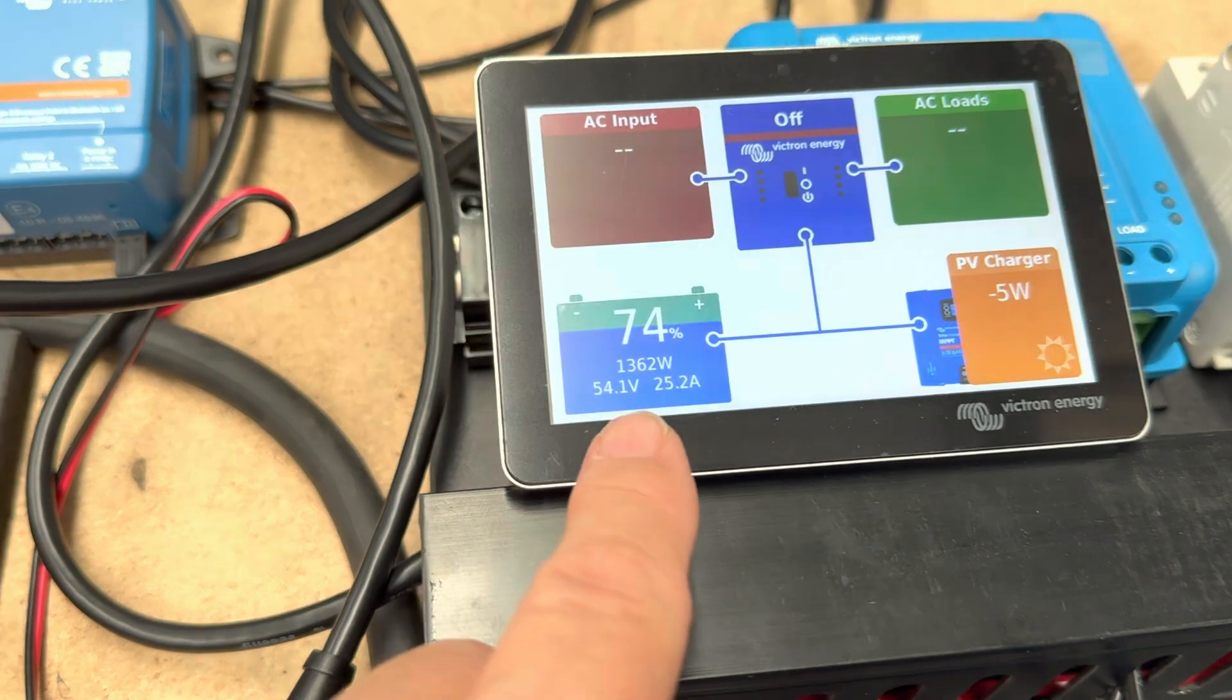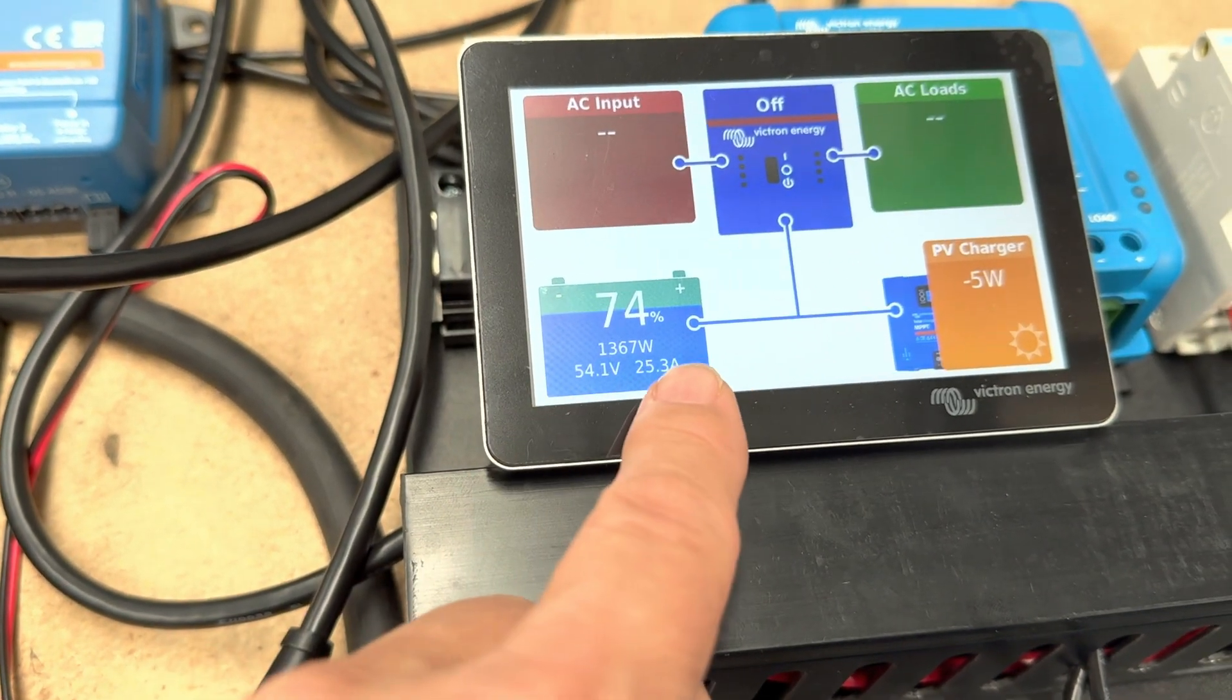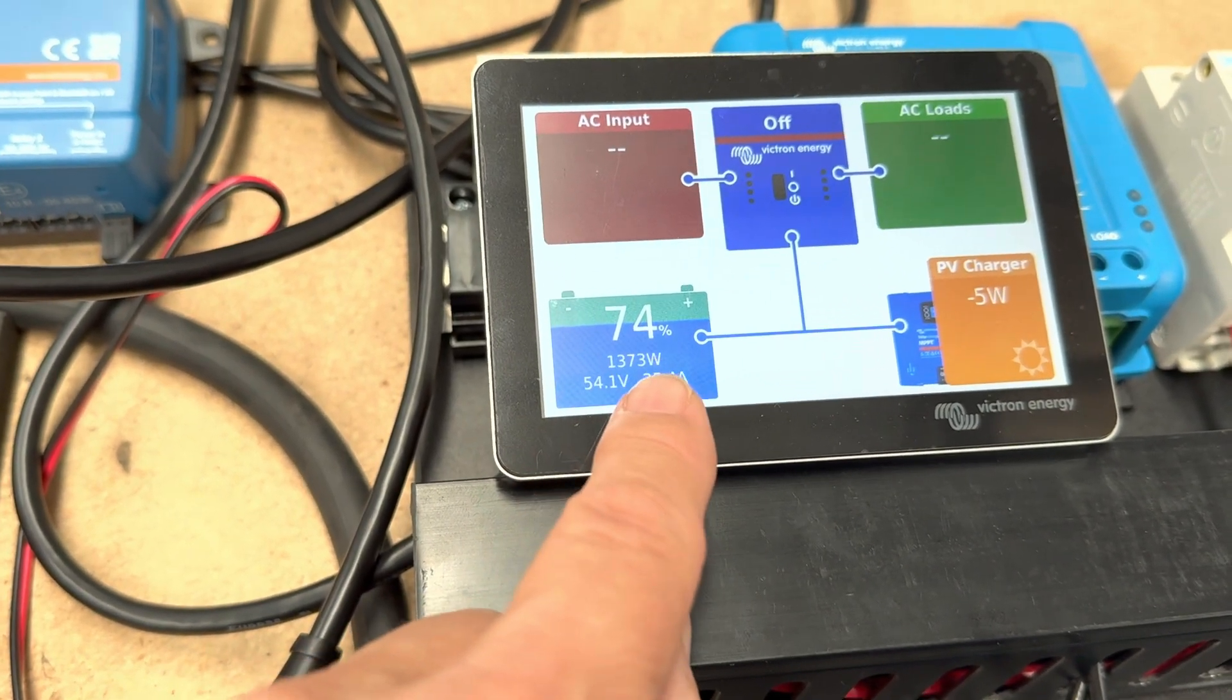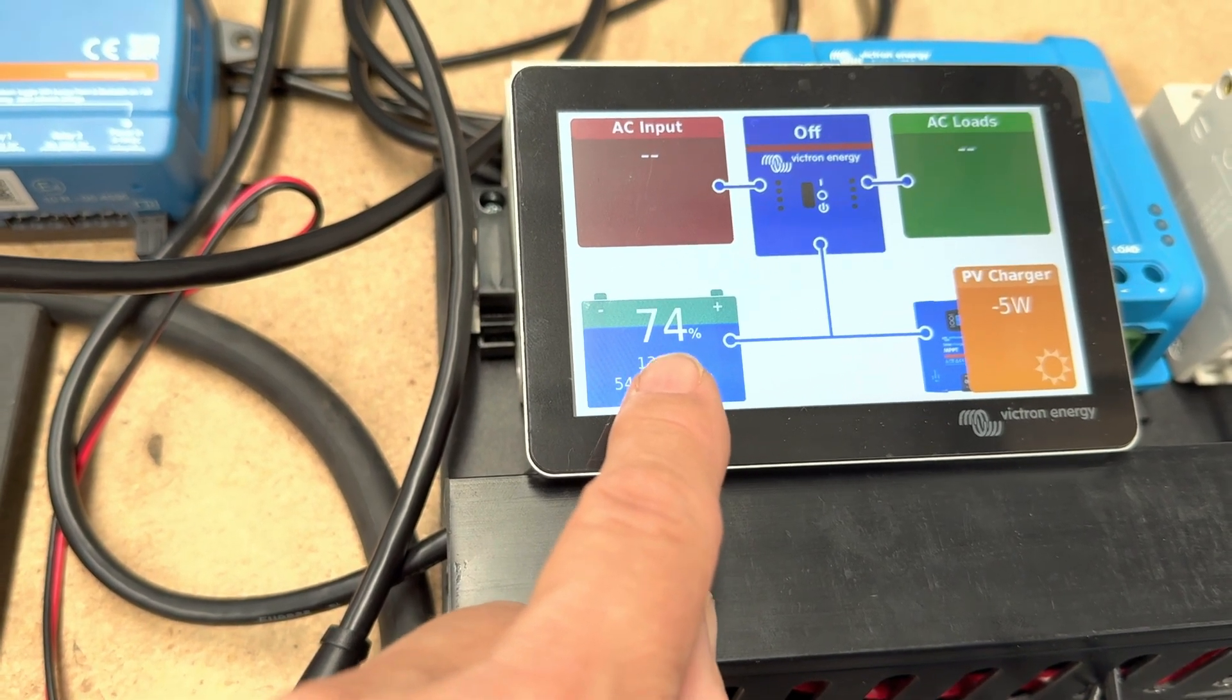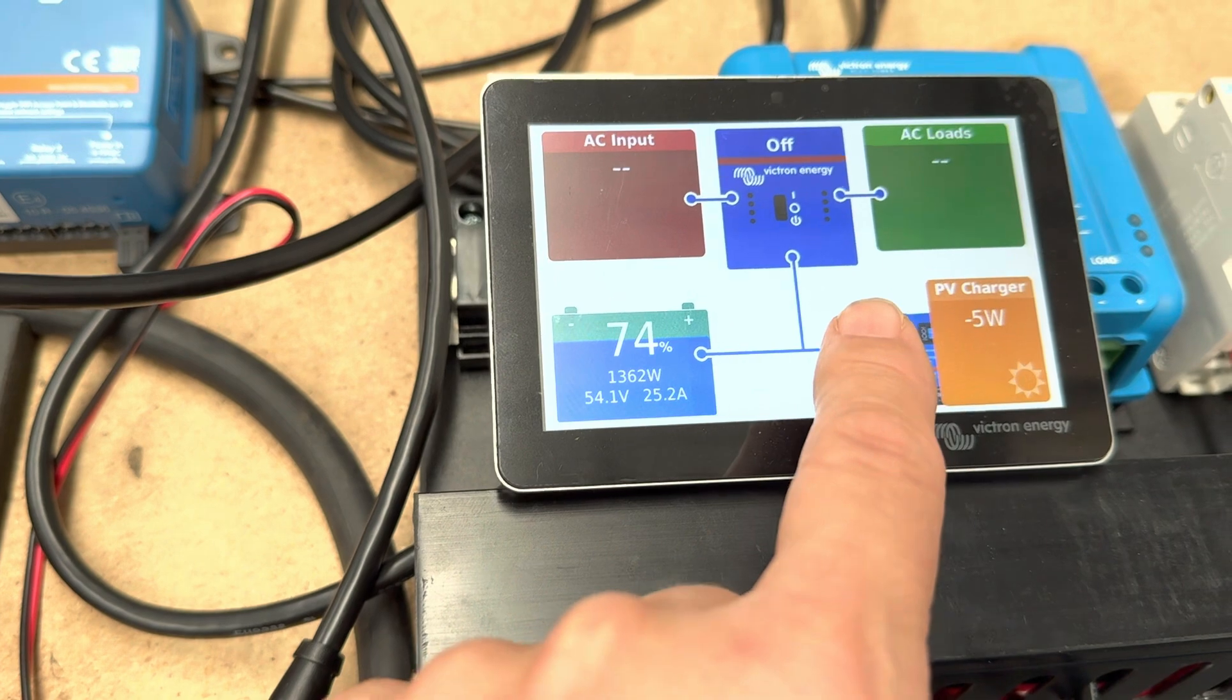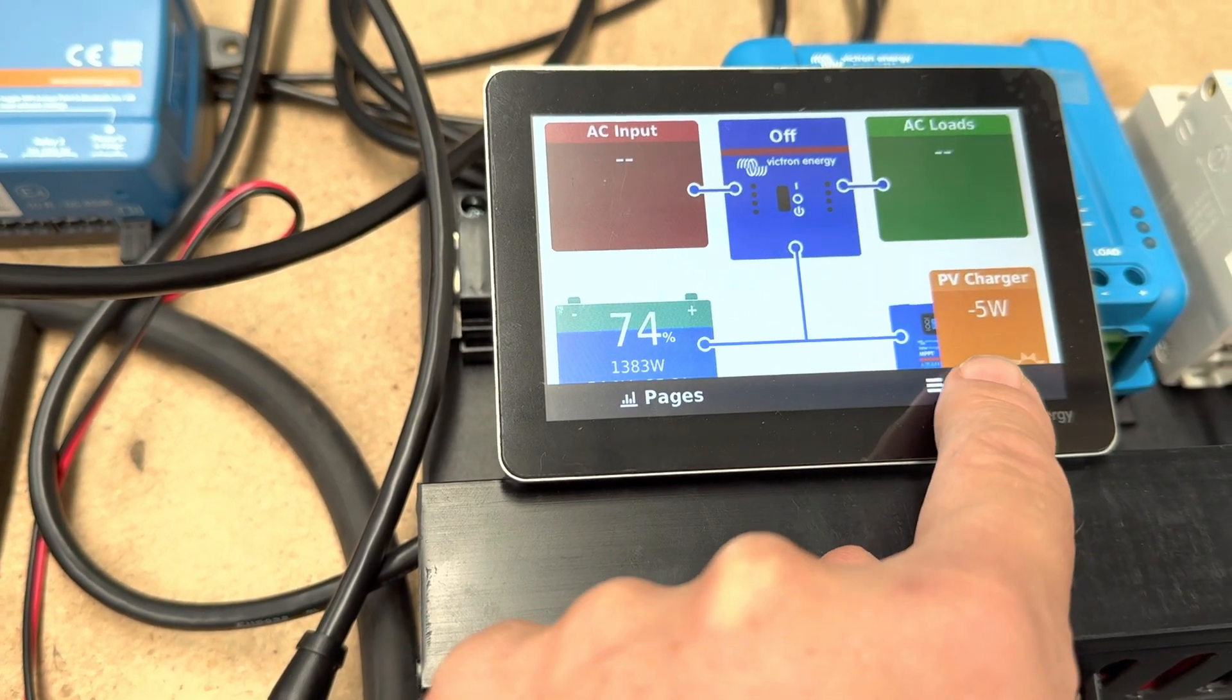Now the voltage is getting up a bit. We're at 54.1, 74%. We're putting in 1373 watts that's going in there now and I'm going to show you in a minute the discharge that we're going to run as well. So let's just have a look at the detail here.